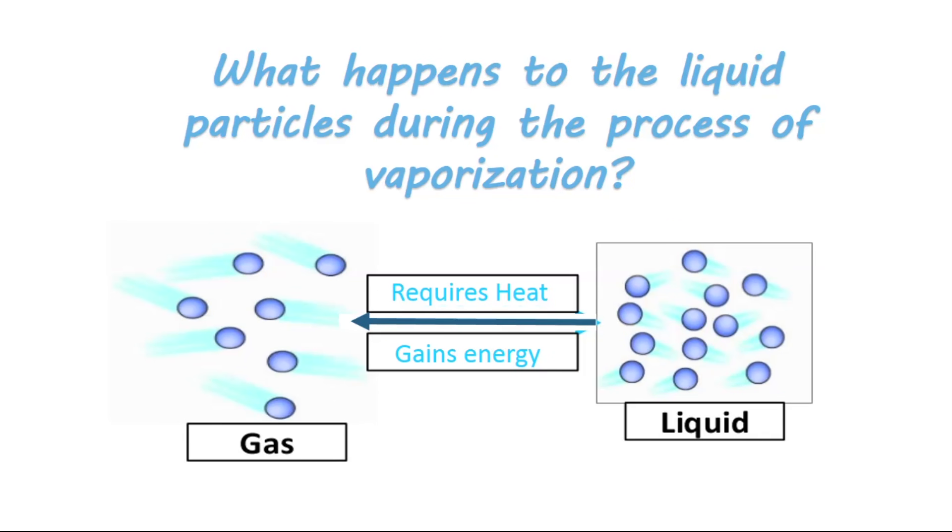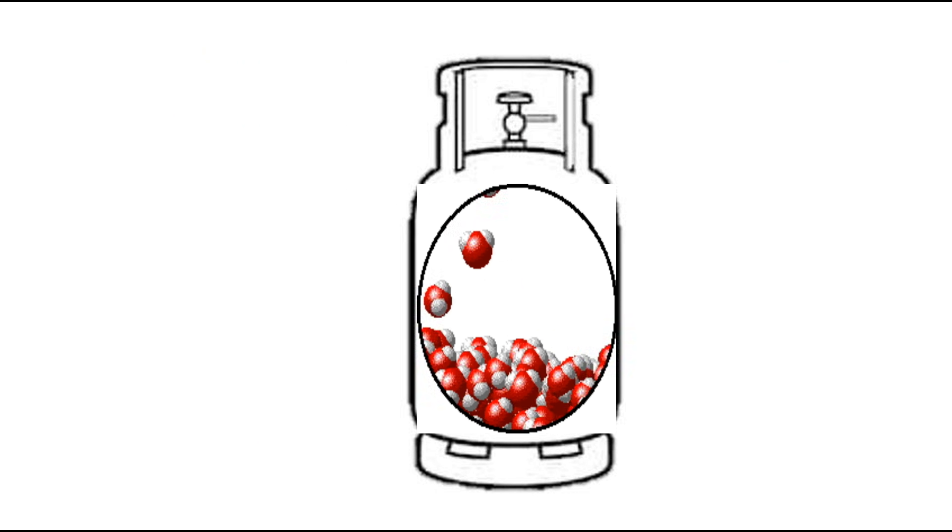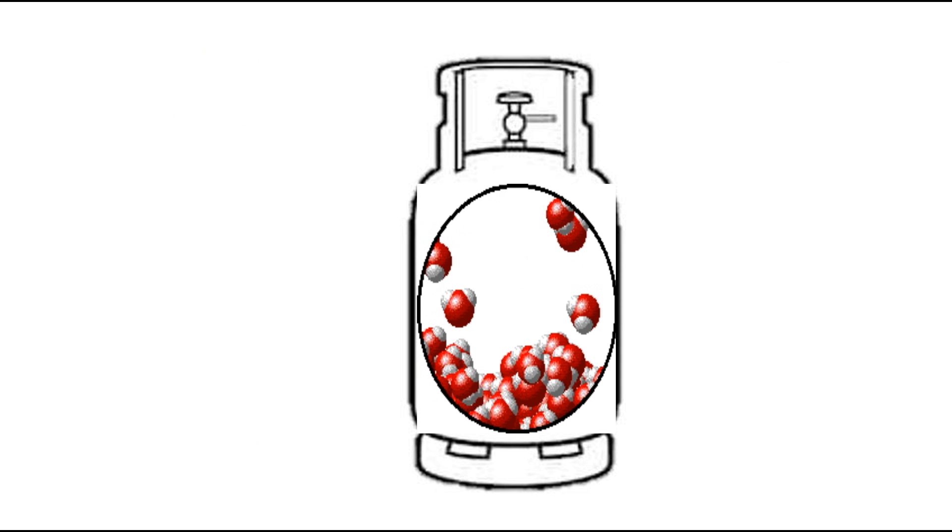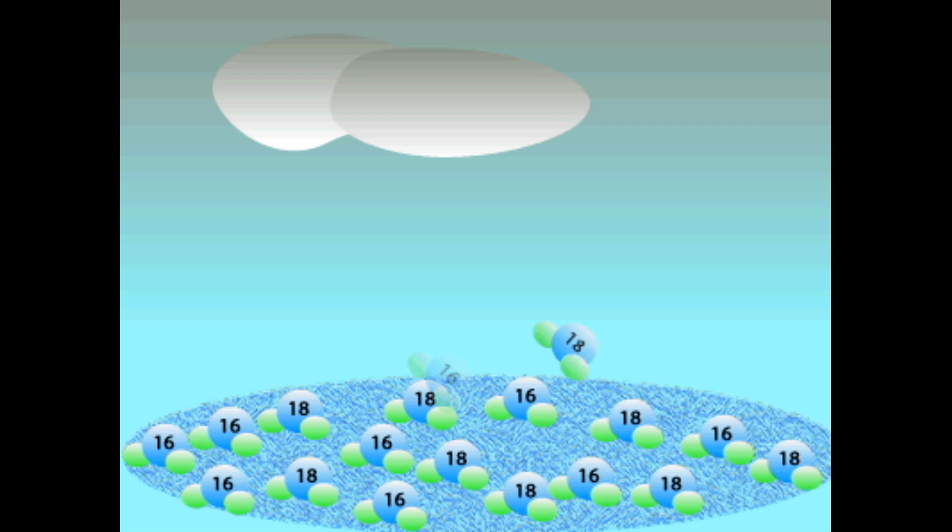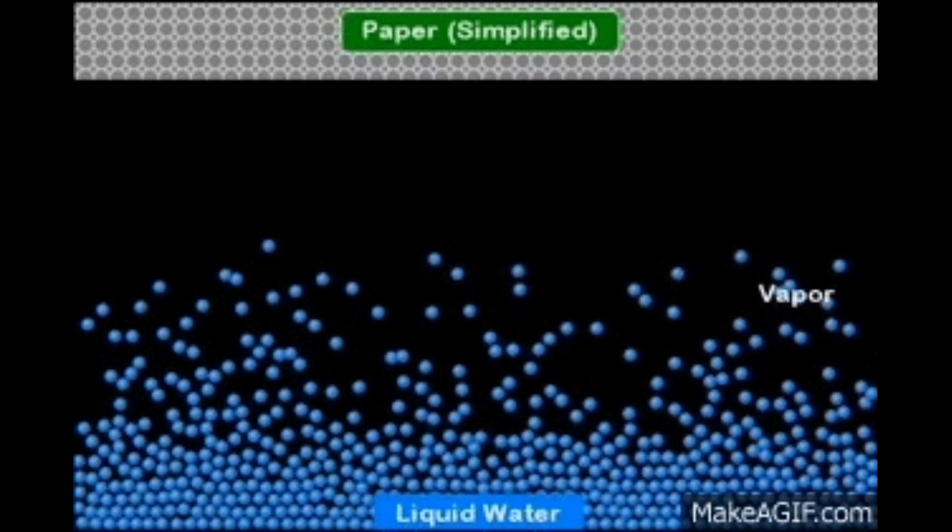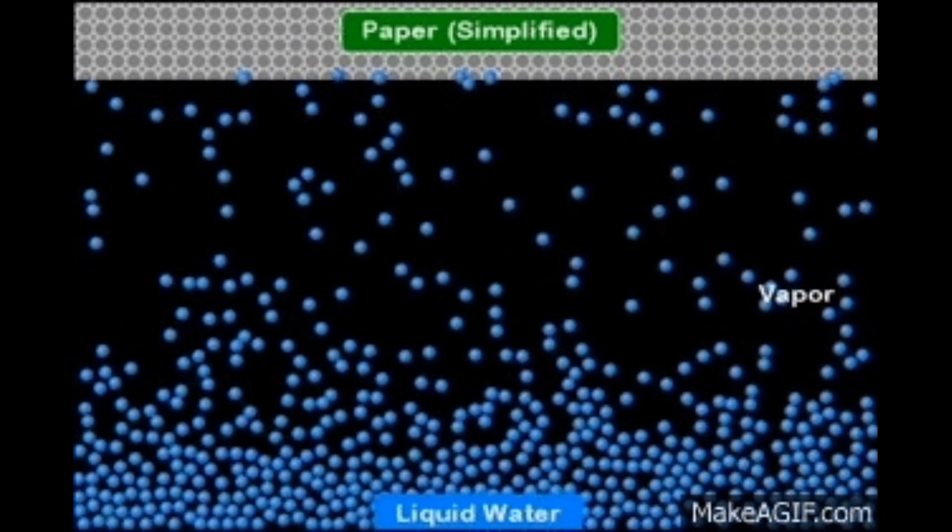To know the answer, let's see what happens to the liquid particles during vaporization. During the phase change from liquid to gas, a ton of energy is required for that change, and this energy has to come from somewhere.